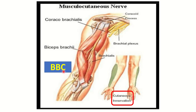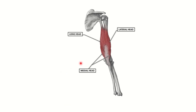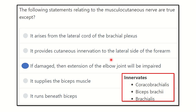In this picture we can see the triceps muscle, which originates from three regions — the long head, lateral head, and medial head — and inserts into the olecranon tuberosity. It causes extension of the elbow joint. So the statement that 'extension of the elbow joint will be impaired if the musculocutaneous nerve is damaged' is not true, because elbow extension is performed by the triceps muscle, which receives its nerve supply from the radial nerve.